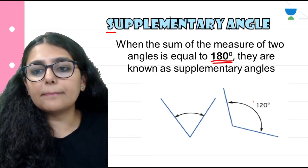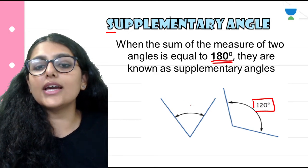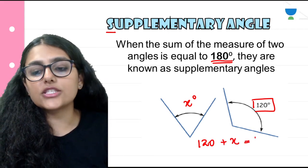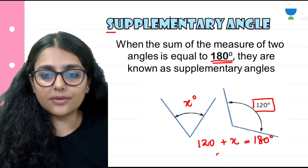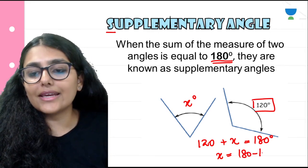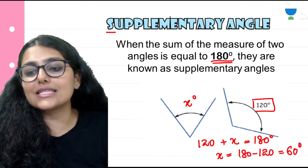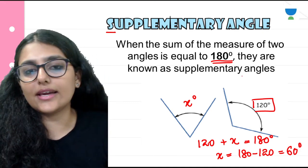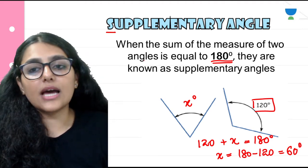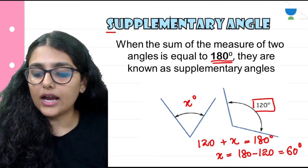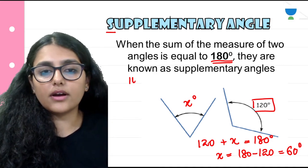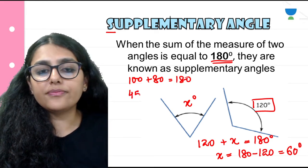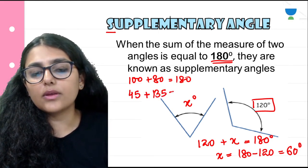For example, if one angle is 120 degrees, the other angle for both to be supplementary should be 180 minus 120, which equals 60 degrees. Similarly, 100 degrees plus 80 degrees equals 180 degrees. And 45 degrees plus 135 degrees equals 180 degrees.